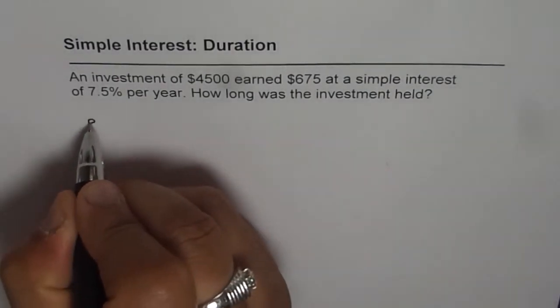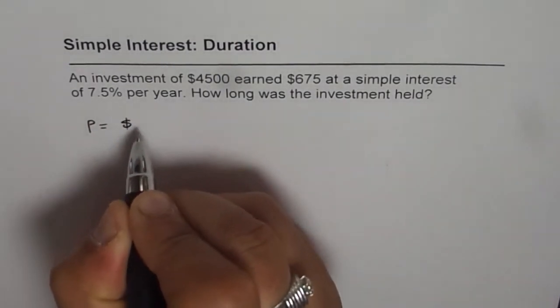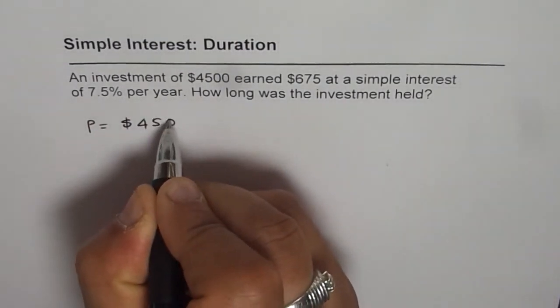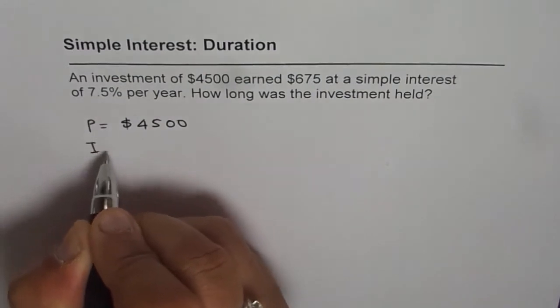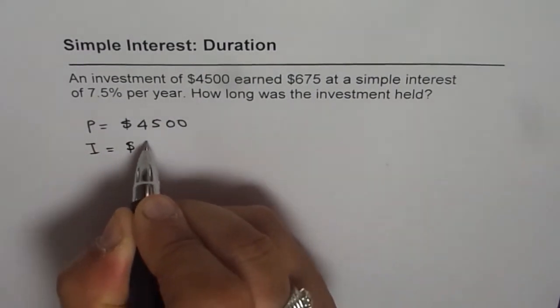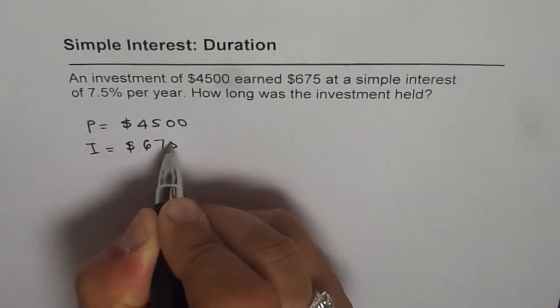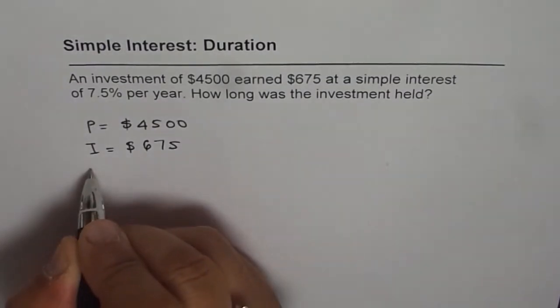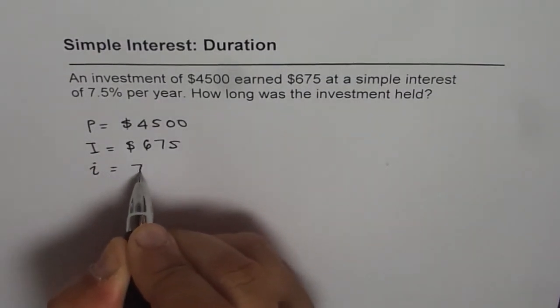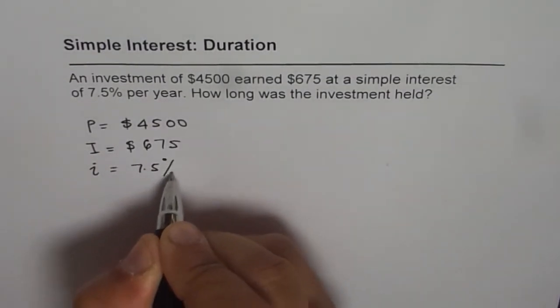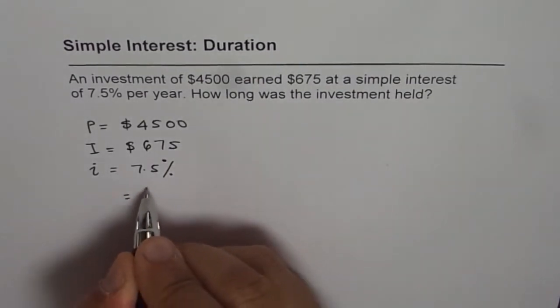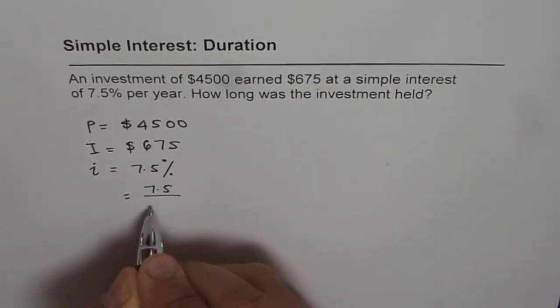We know the principal amount is equal to $4,500 and interest earned is $675. Interest rate is 7.5 percent or the decimal value is 7.5 over 100.